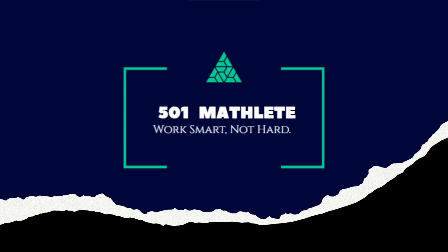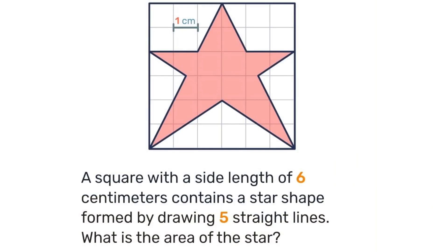Good day and welcome to 501 Matley where we work smart not hard. In today's problem we're given this square with a side length of 6 centimeters and it contains a star shape formed by drawing 5 straight lines. With that we're to determine the area of the star.